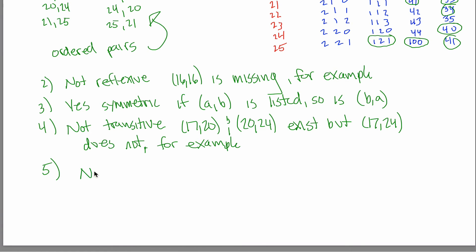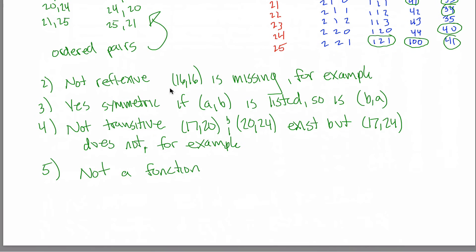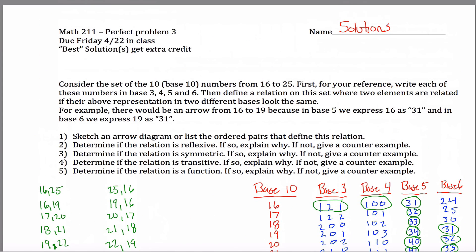Number five, is it a function? No, it's not a function. To be a function, you must have at most one arrow leaving every element in the domain. There'd be an arrow if I were drawing an arrow diagram from 16 to 25, but also from 16 to 19. So that makes it not a function. You can't have more than one arrow leaving a given element, 16 in this case. So it is not reflexive. It is symmetric. It's not transitive. And it's not a function. I think that was all the questions that were asked. So I guess I'll end this here.